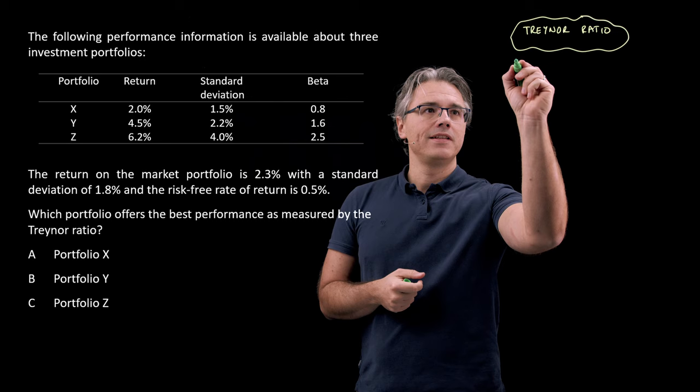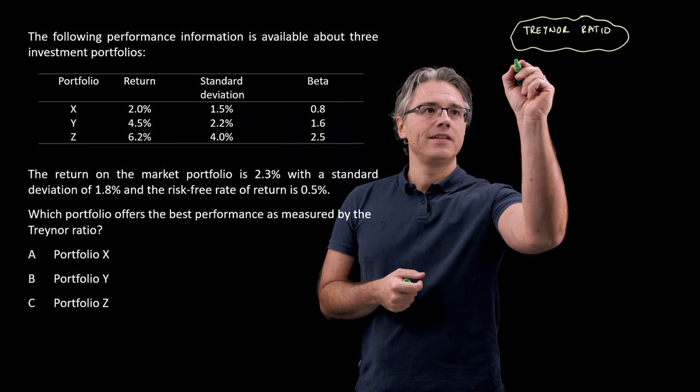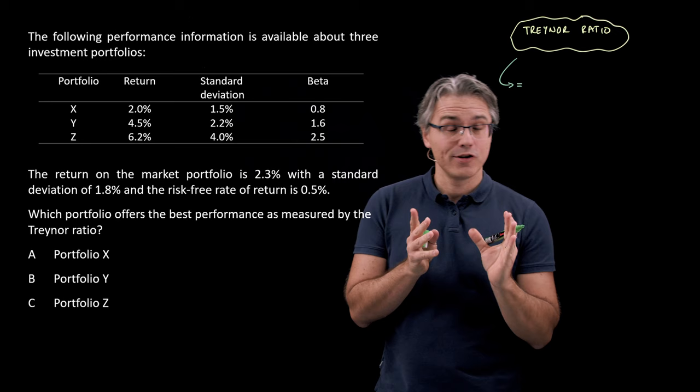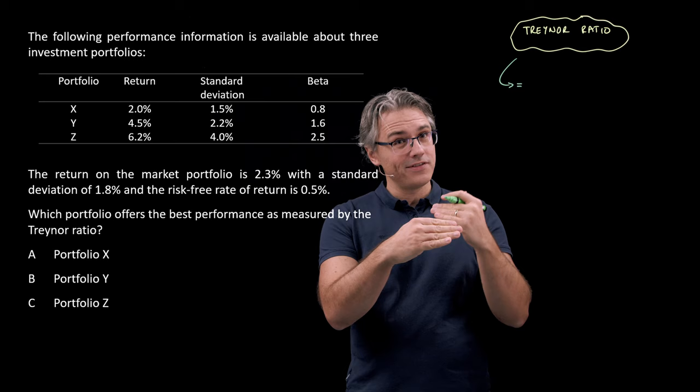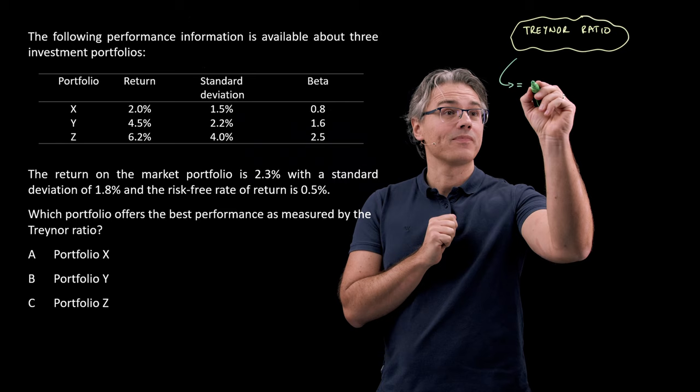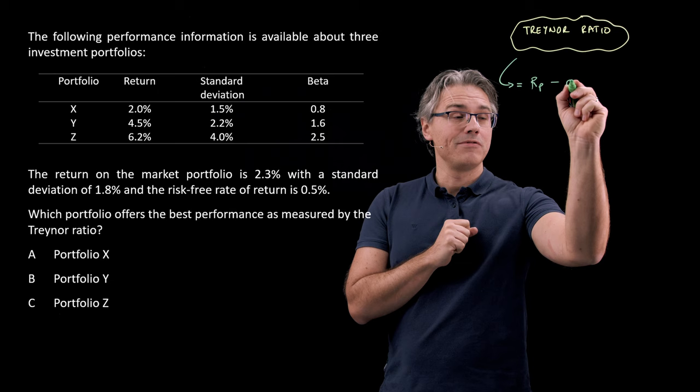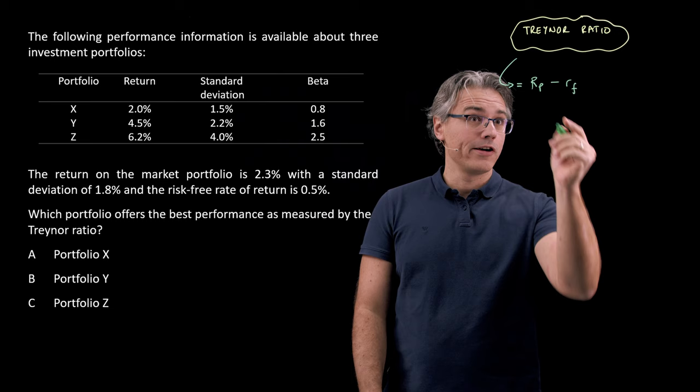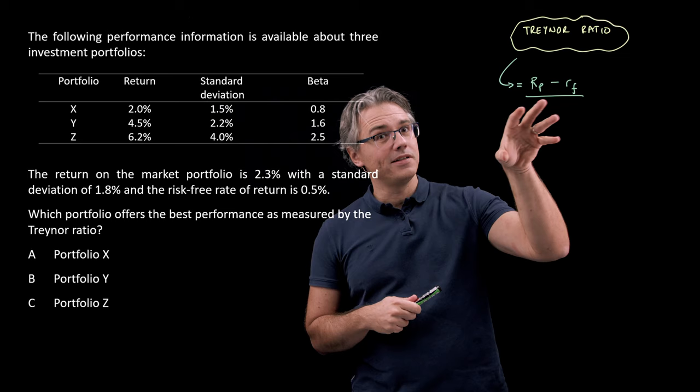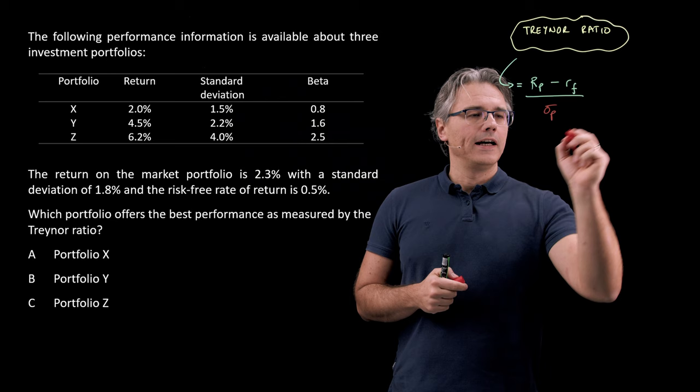So what is the Treynor ratio? It's very similar to the Sharpe ratio which you may know from your earlier studies. It's like Sharpe but it's got something different in the denominator. What we're going to have is the return on the portfolio minus the return on the risk-free asset, just like you would have with the Sharpe ratio with one exception. In the Sharpe ratio, you would be dividing by the standard deviation, which is a measure of total risk.